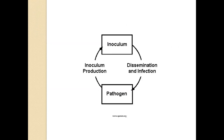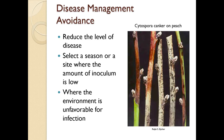This is the basic plant disease life cycle: the pathogen produces inoculum in large quantities, which then disseminates and creates infection. Some diseases are more complex in detail, but this is the fundamental cycle to understand for disease management.